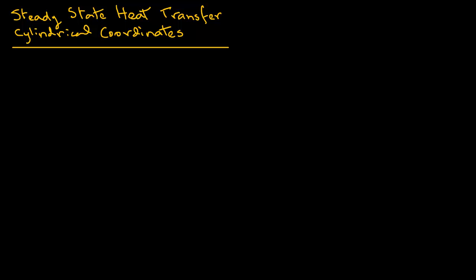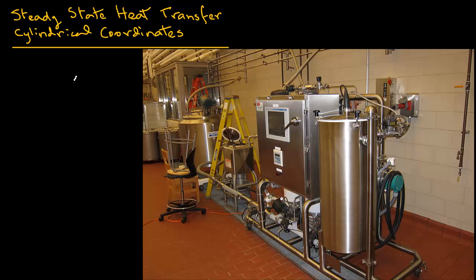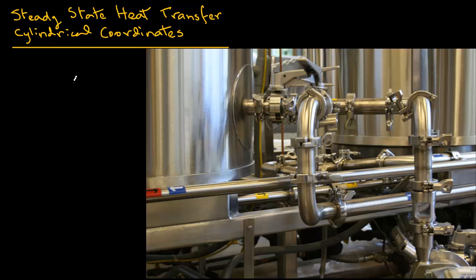In this module we will continue our discussion related to steady-state heat transfer in a rectangular wall, except this time we will look at conduction in cylindrical objects. One example would be heat transfer in a tubular pipe. In food processing plants we find several processing equipment in the shape of a cylinder, and liquids are transported in cylindrical pipes, many times heated or cooled while contained in a cylindrical shaped chamber or pipe.